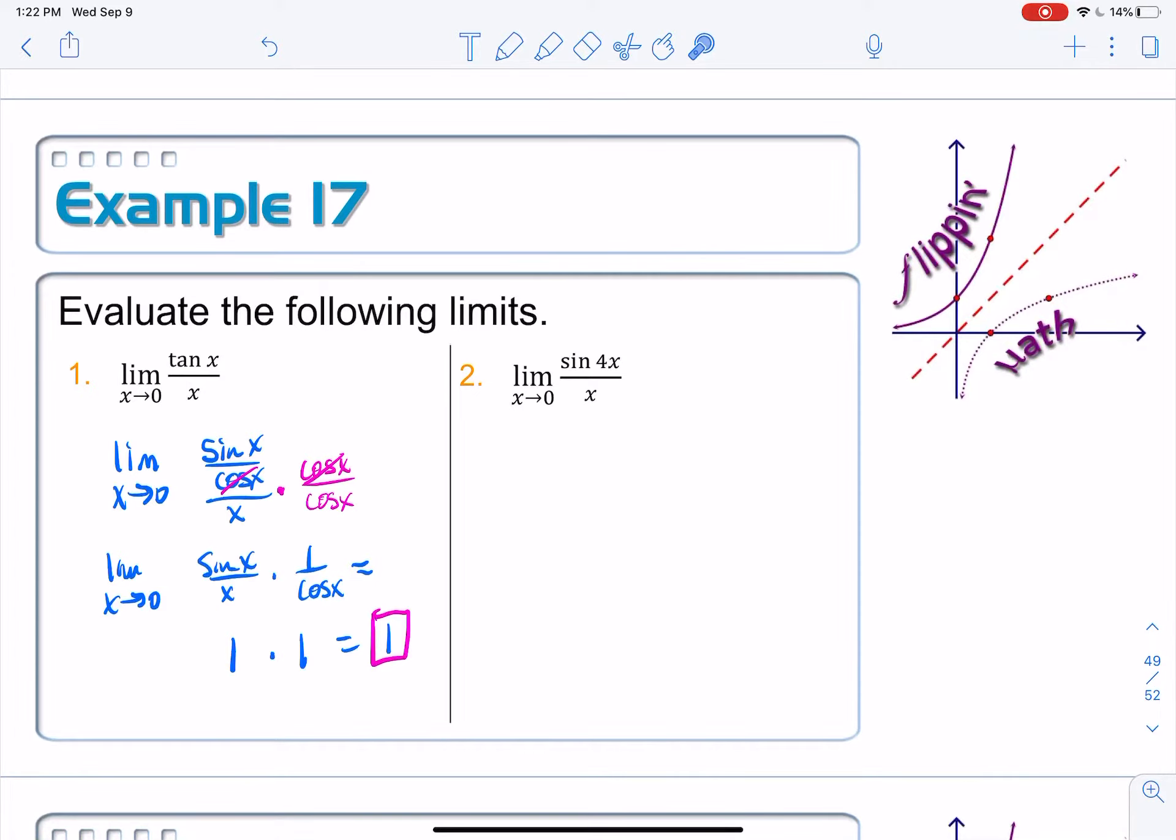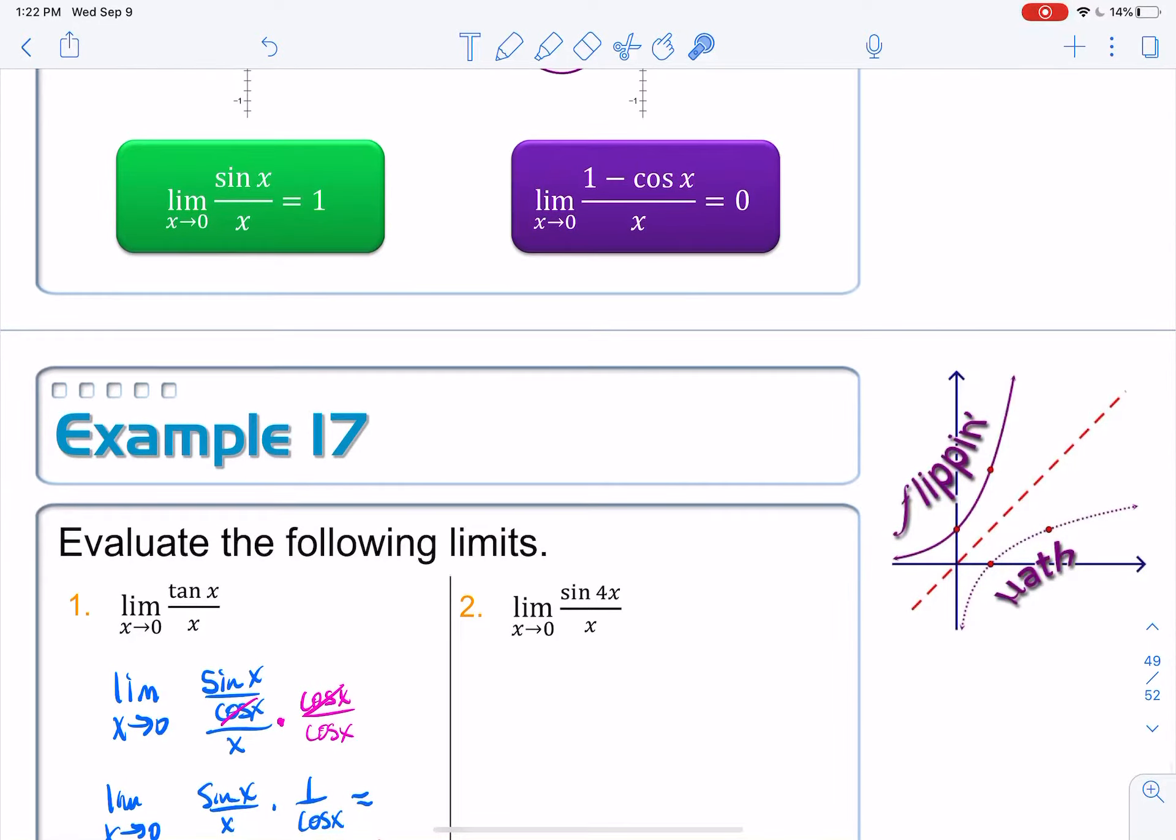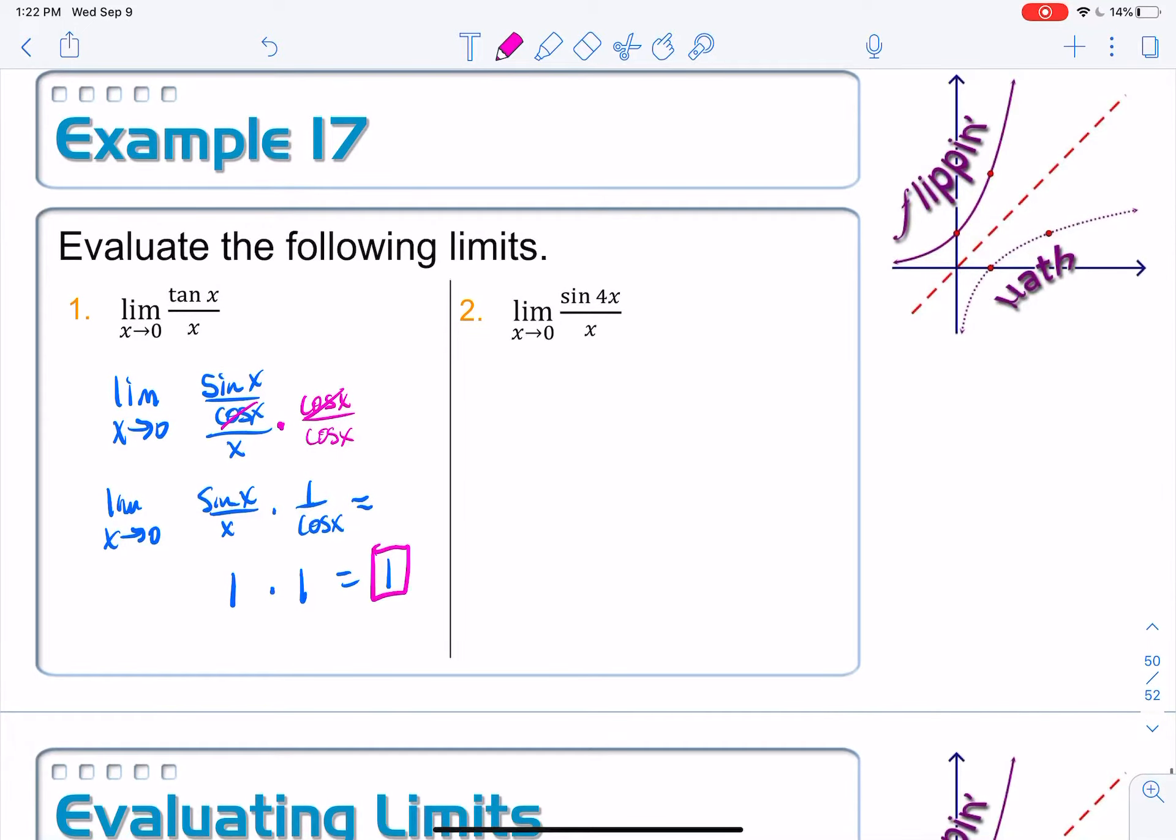On number 2, I have the limit as x approaches 0 of sine of 4x over x. This one still looks sort of like this, however, I got this 4 that's messing stuff up a little bit. And I can fix that, though. Think of it as the limit as some k goes to 0, sine of k over k. And it doesn't matter what is inside here as long as the bottom also matches. So I'm going to do the same thing on this one. This one's a 4x, then I need to make this one a 4x on the bottom.